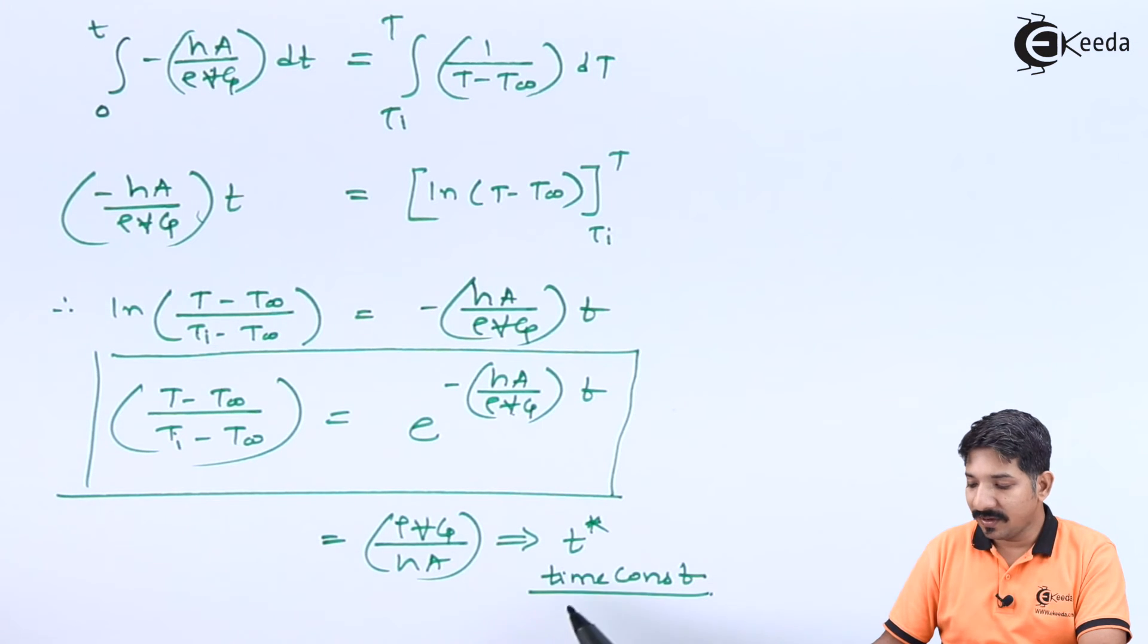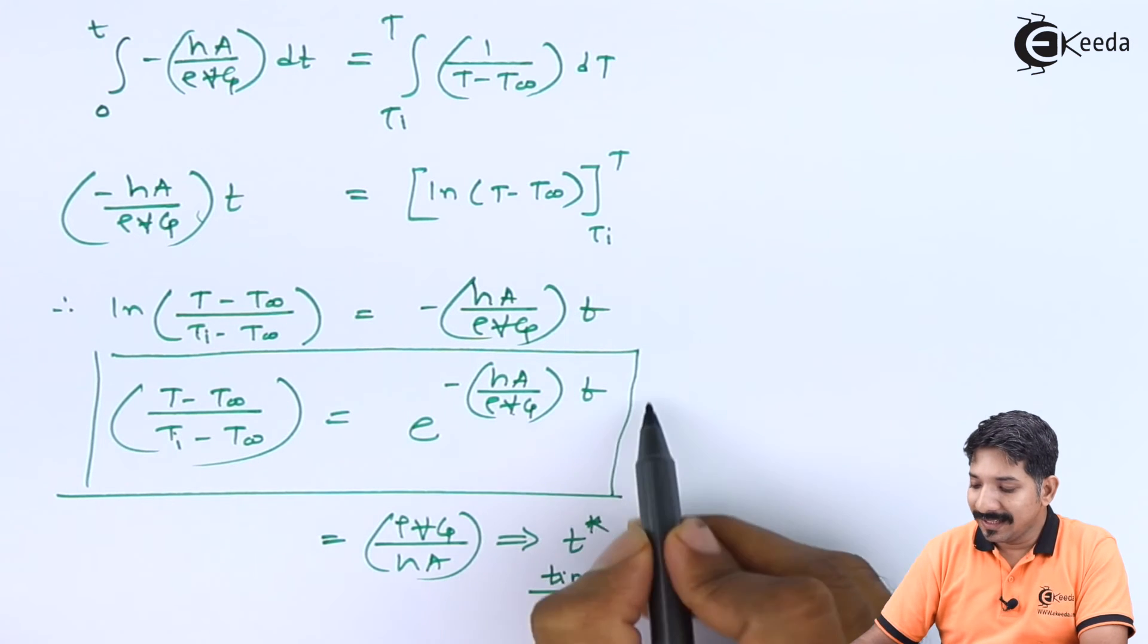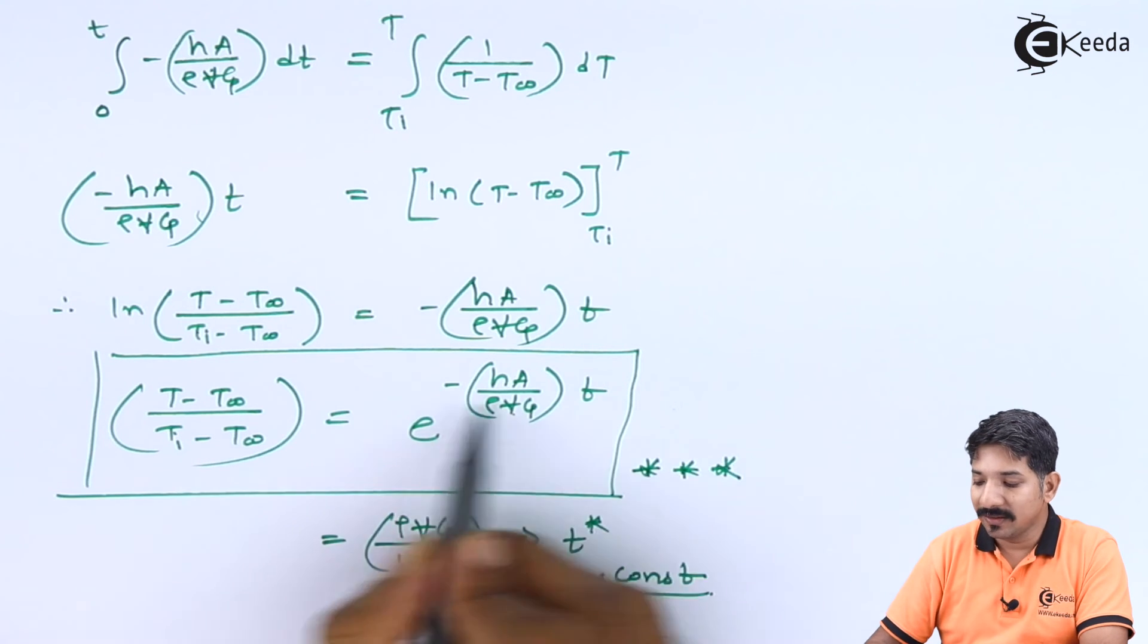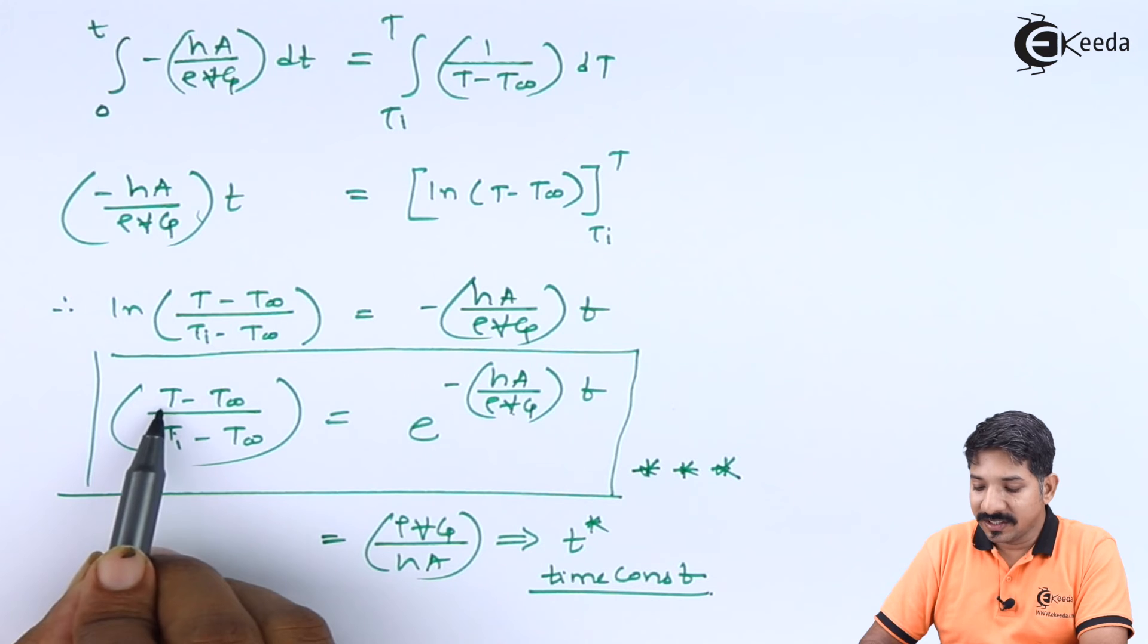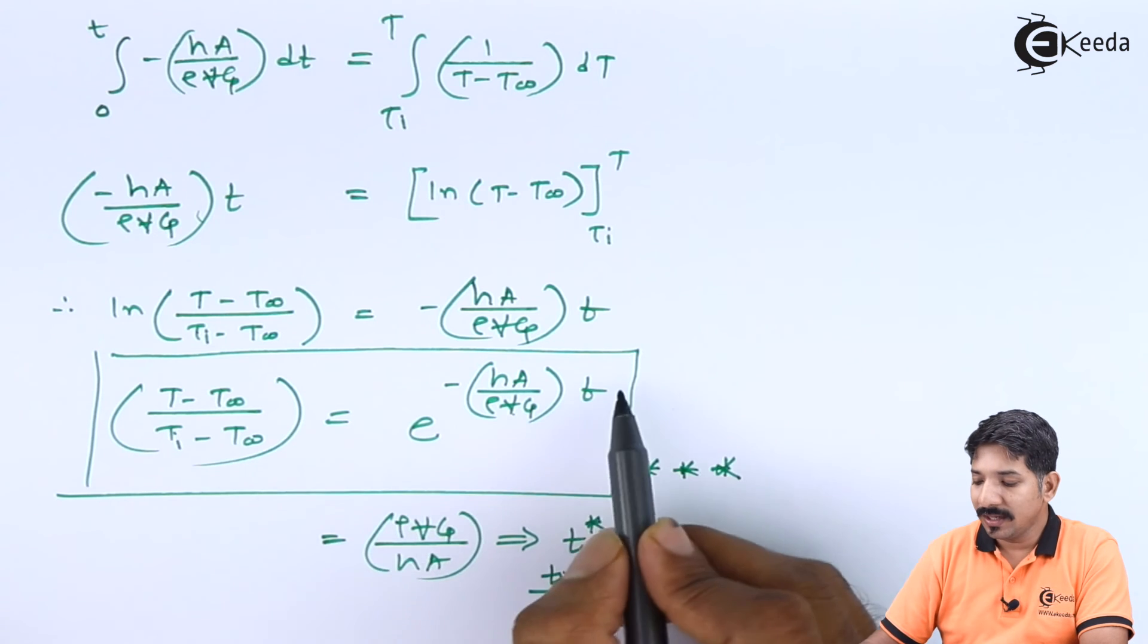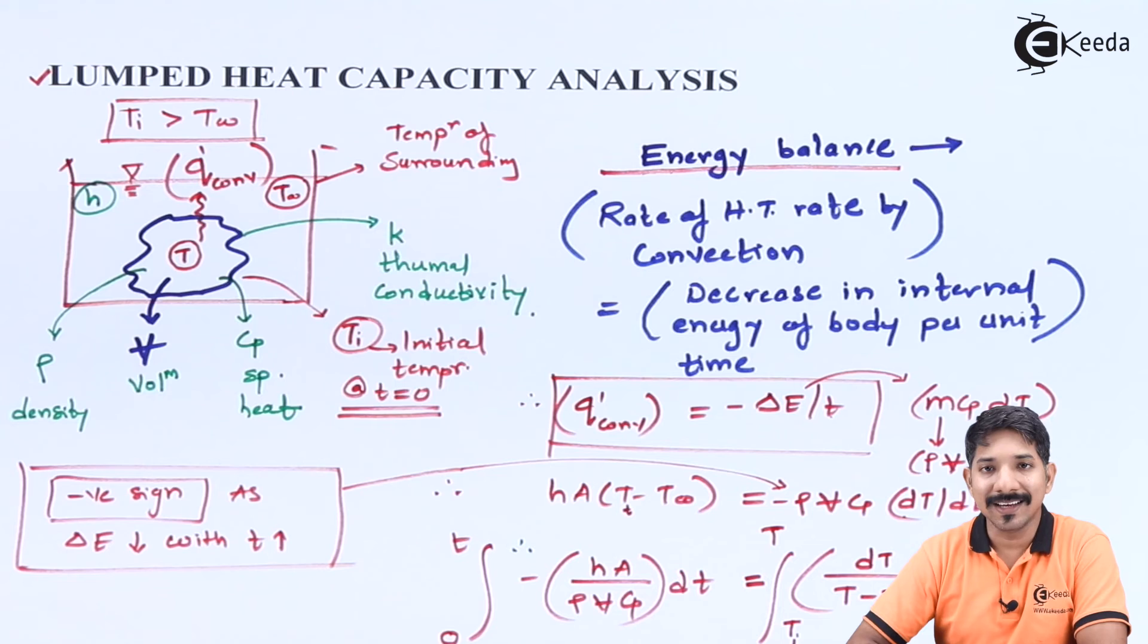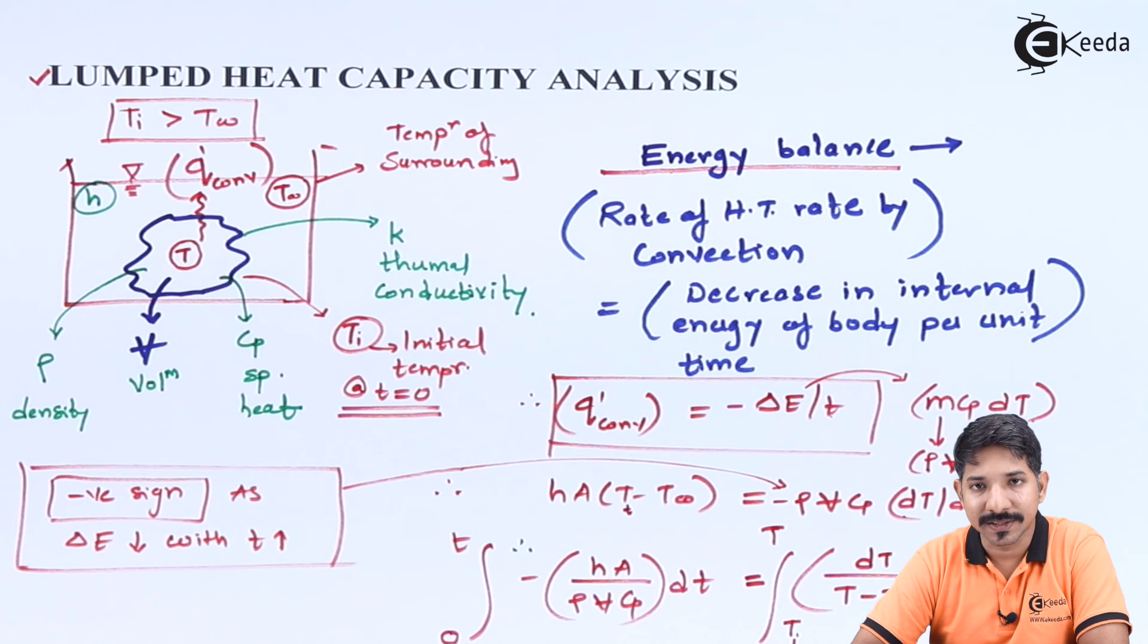We will be simplifying this further also, so for the time being this expression itself is good enough. We can conclude from the expression that we have achieved the temperature distribution where the temperature for a given body can be found out at any time t. In this analysis, we have tried to find out the temperature distribution of a given body with the lumped heat capacity method.